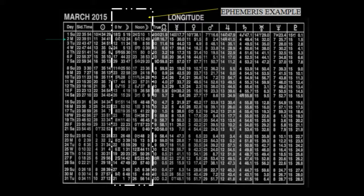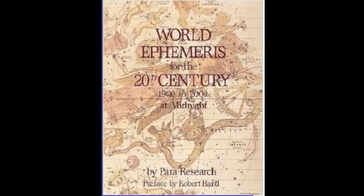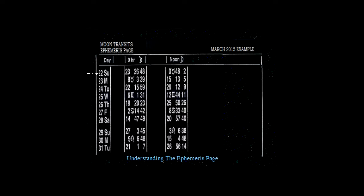Now we enter the 22nd of March 2015, as an example demonstration of how the moon transits. The noon moon travels through the ephemeris and we track the daily motion of degrees it travels. Now on the 22nd the moon is in 0 degrees Taurus, and then the next day the 23rd, which is a Monday, it's 15 degrees Taurus. So comparing 0 degrees minus 15 is 15 degrees in an earth sign. Remember the trinity of earth: Taurus, Virgo, Capricorn.